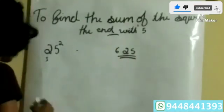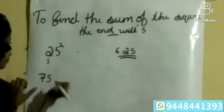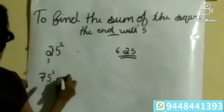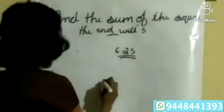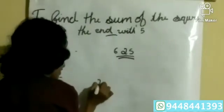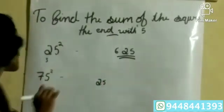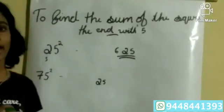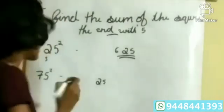Next, 75 squared. The last two digits are always 25. Then 7 plus 1 is 8, and 8 into 7 is equal to 56. So 75 squared equals 5625.